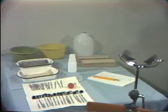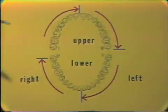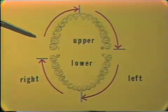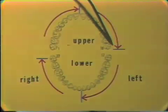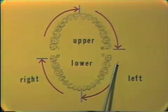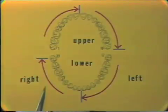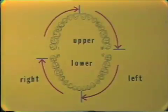The teeth are examined starting from the upper right third molar space and continuing across the upper arch to the upper left third molar space. The examiner then drops to the lower arch beginning with the lower left third molar space and continues around to the right side of the patient's mouth, ending with the lower right third molar space. Every tooth is checked for decay.